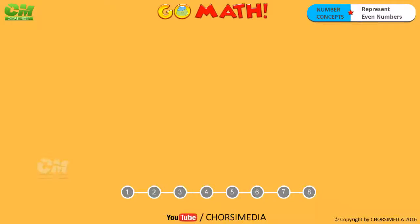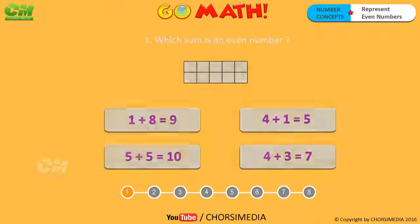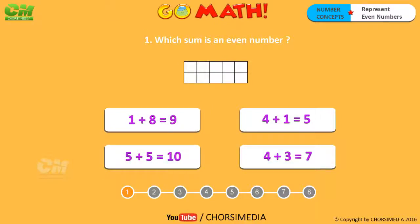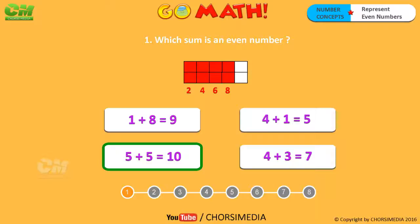Which sum is an even number? You are right! The correct answer is five plus five equals ten. Two, four, six, eight, ten — ten is an even number.